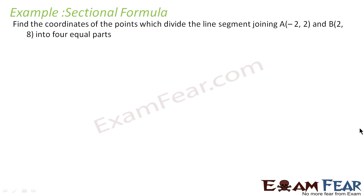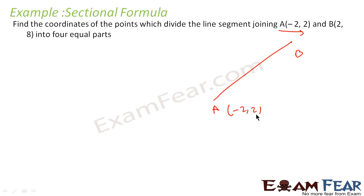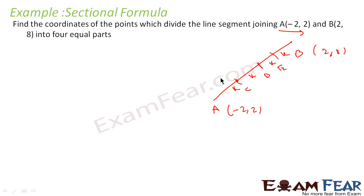Next example: find the coordinates of the points which divide the line segment joining A(−2, 2) and B(2, 8) into 4 equal parts. We divide AB into 4 equal parts each of length K, giving three interior points C, D, and E. Point C divides AB with left side K and right side 3K, so the ratio is 1:3.